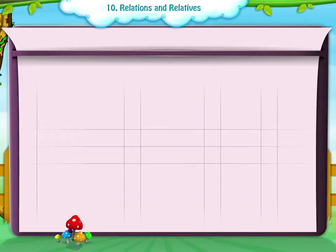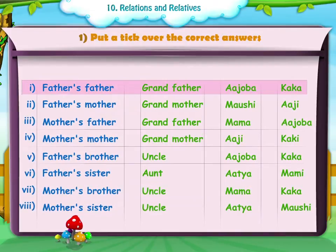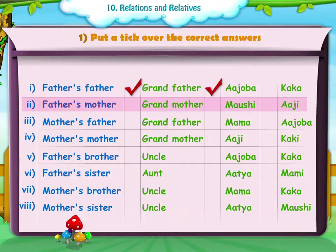On the basis of this, let's have some fun. Put a tick over the correct answer. 1. Father's father: Grandfather or Adzoba or Kaka. 2. Father's mother: Grandmother or Maoshi or Adji.